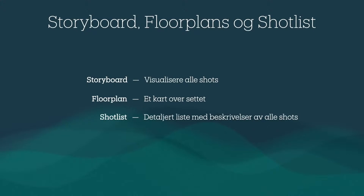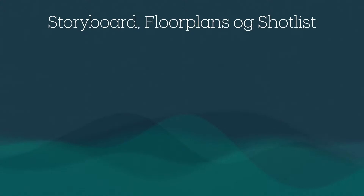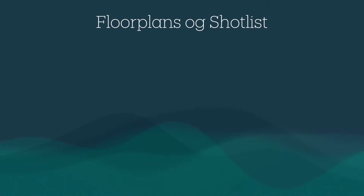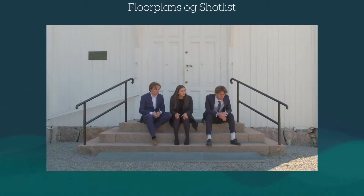Til slutt tar vi en shotlist, som er en liste som bryter hver scene ned i enkelt skudd og gir detaljert informasjon om relevante utstyr og utsnitt. Alt dette gir crew bedre oversikt over akkurat hvordan det skal se ut på settet under opptak og hva visjonen for den ferdige scenen er. Nå kan vi se på et eksempel fra en ekstremt profesjonell produksjon. I denne scenen brukte vi ikke storyboards, kun floorplans og shotlist.